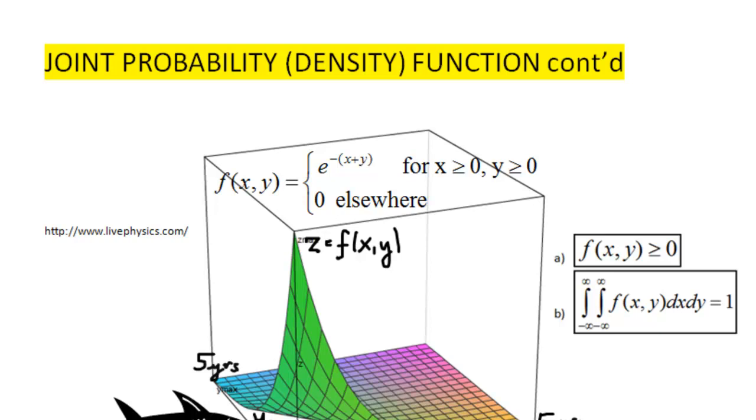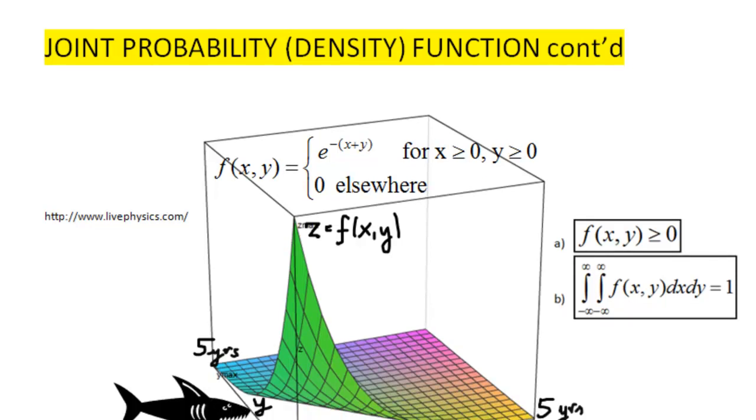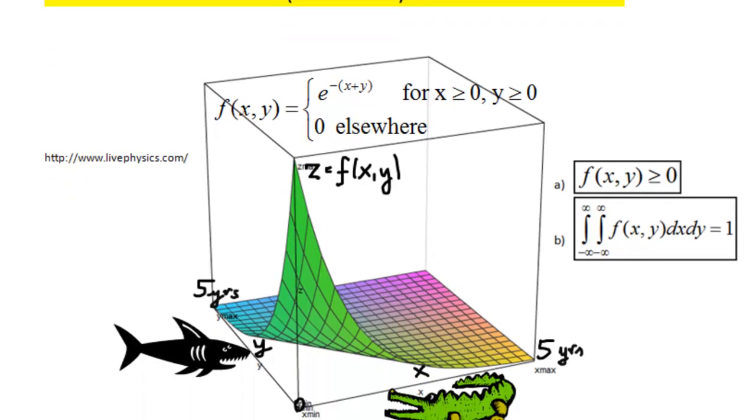In the previous video, we showed how to verify that we are dealing with a valid joint PDF. We have shown that we need to check that two conditions are met, namely the function is positive and the second condition is that the double integral of this joint PDF sums up to 1.